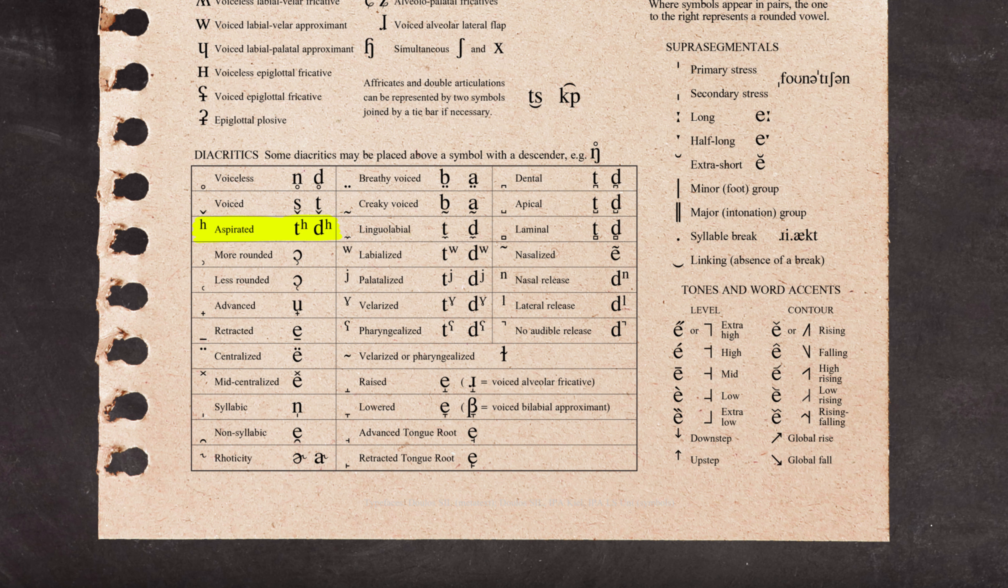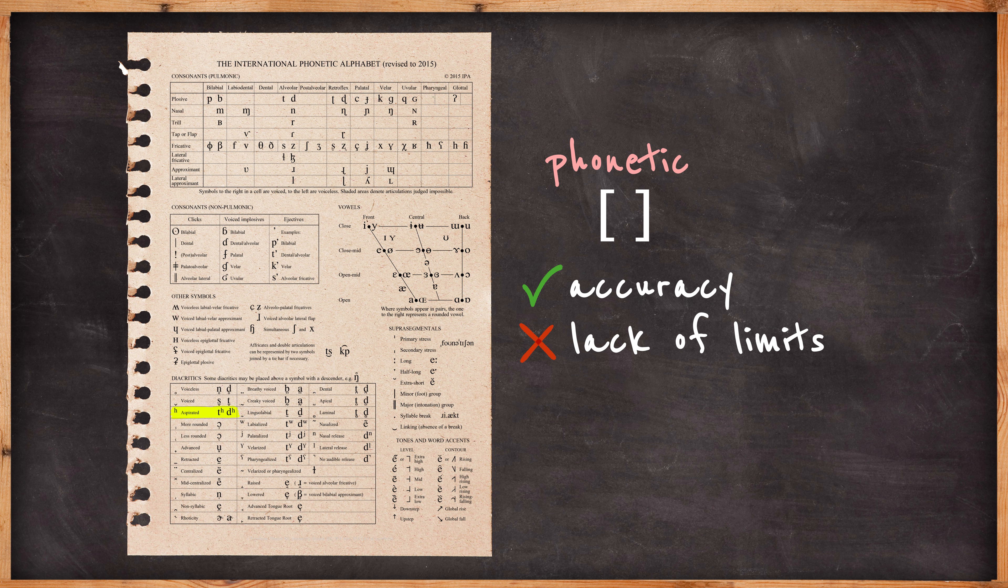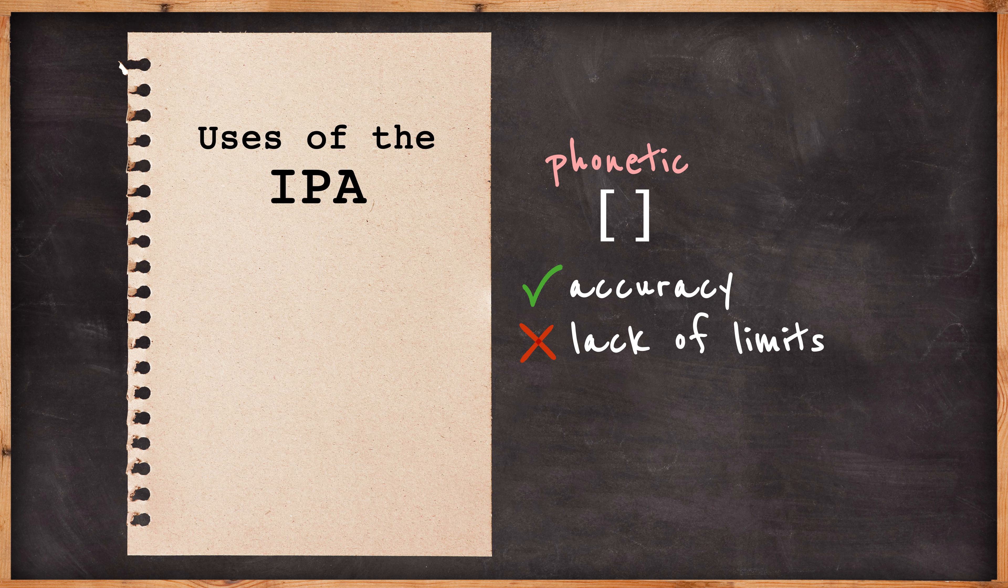This is both the huge advantage to learning phonetics and a little bit the drawback. With so many options, it can become confusing to know where to draw the line in terms of detail. How accurate does this thing need to be?